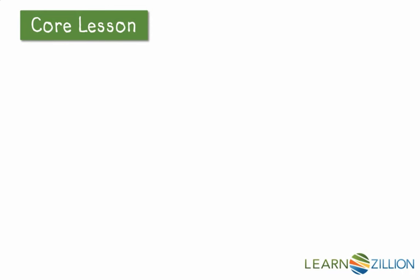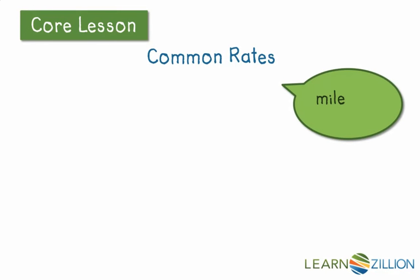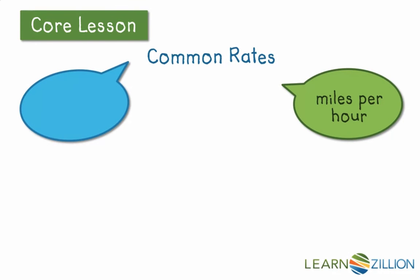To examine why a rate is different than a ratio, let's think of some common rates. Maybe you know of one that deals with speed — miles per hour, how fast a car, plane, or train is going. Or maybe you recently saw a commercial for a new car and they talked about their miles per gallon — that's a rate of fuel economy.